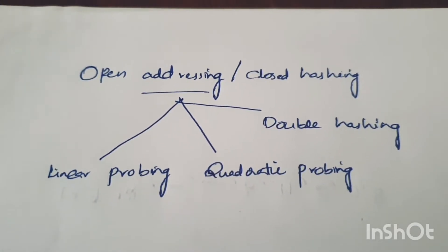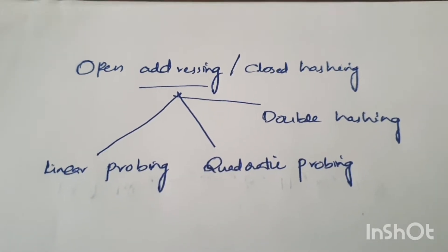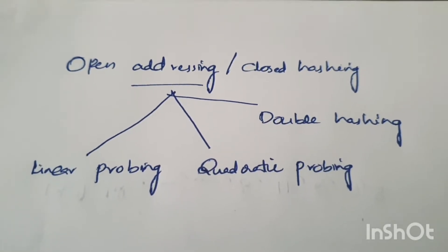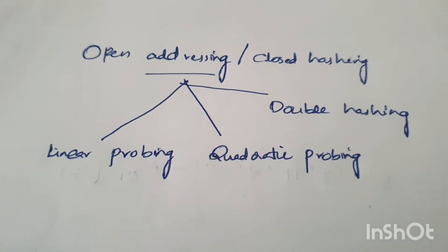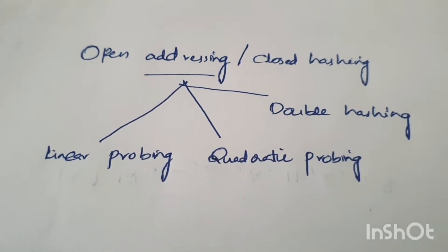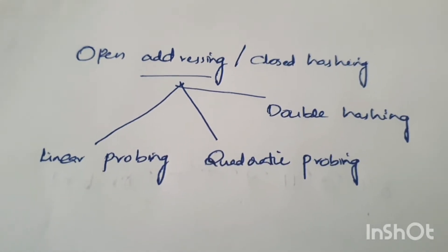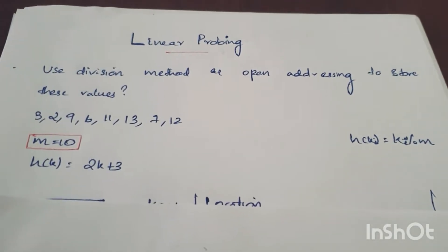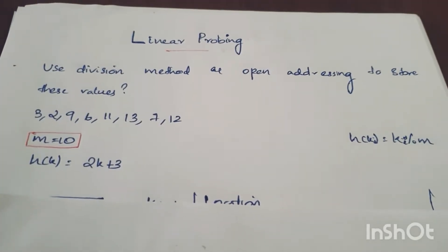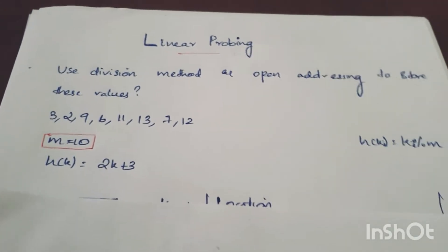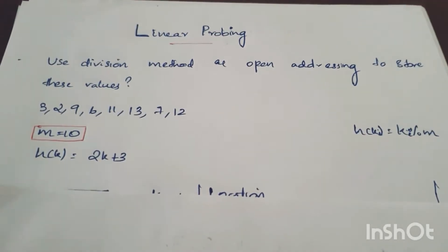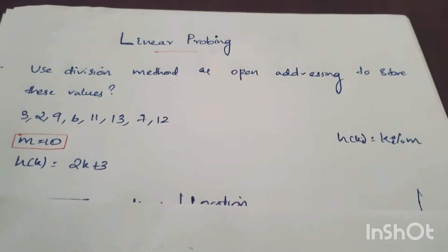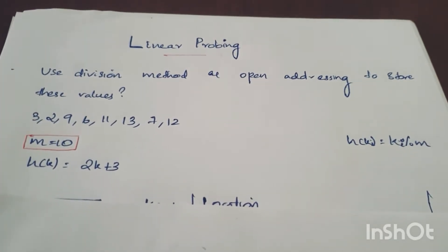Hello friends, this video is called Collision Resolving Technique. The second type is Open Addressing or Closed Hashing. There are two types of Collision Resolving Techniques: one is Separate Chaining and the second is Open Addressing.